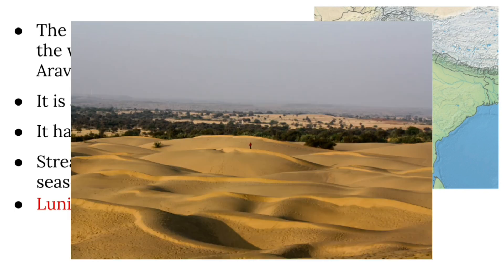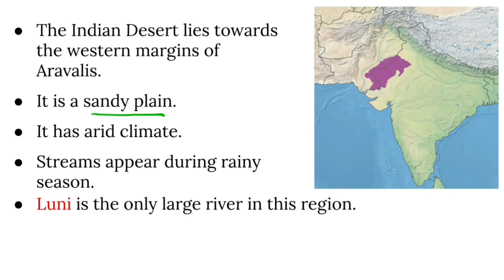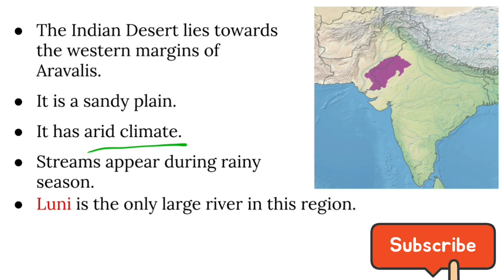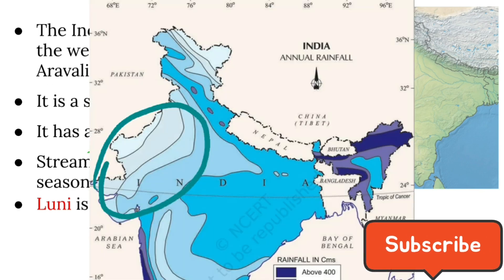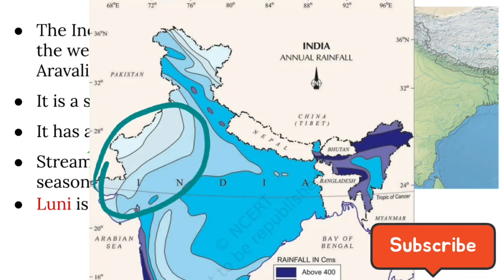From this picture it is clear that it is a sandy plain. It has an arid climate since it receives rainfall of less than 150 mm per year.